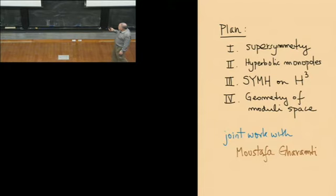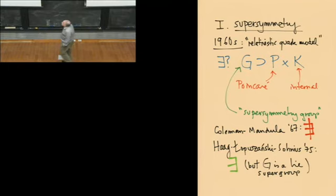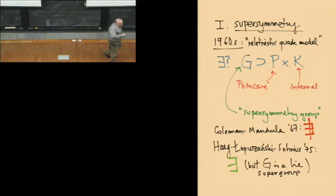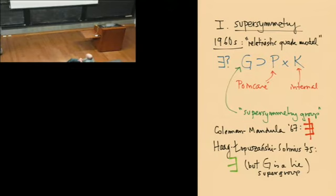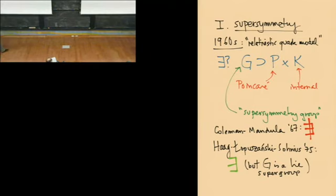I'll start with supersymmetry — just a little bit of the history, and maybe even why it's called supersymmetry. Back in the 60s, in the context of elementary particle physics, people had noticed certain symmetries. Particles transform according to irreducible representations of the isometry group of Minkowski space, that's the Poincaré group P. Then there were internal symmetries that organized the spectrum of particles being discovered, typically a compact Lie group K.